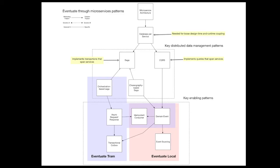This slide shows the relationship between the Eventuate platform and key microservice architecture patterns. A defining characteristic of the microservice architecture is that the services are loosely coupled. To ensure loose coupling, each service must have its own database. Transactions and queries that span services should avoid distributed transactions, since they're a form of runtime coupling. As a result, you must use the distributed data management patterns to implement transactions and queries that span services in a microservice architecture.